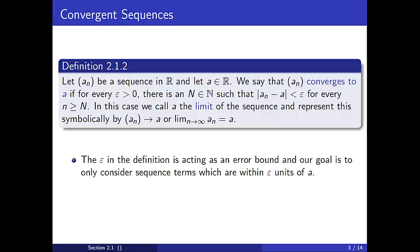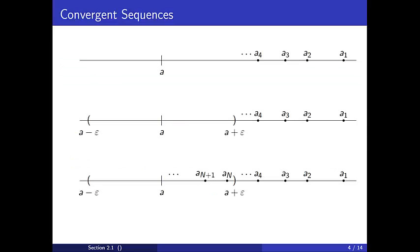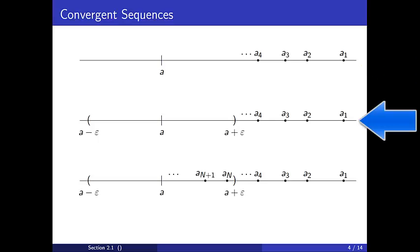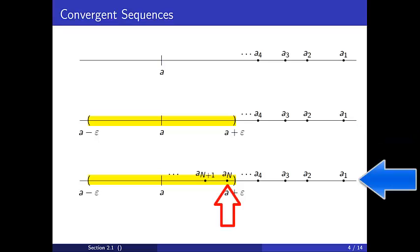Looking at the definition of a convergent sequence more closely, suppose we have a sequence a_n and a limit candidate a. The epsilon in the definition is acting as an error bound and our goal is to only consider sequence terms which are within epsilon units of a. Capital N represents a position in the sequence and we must choose this explicitly. Choosing an arbitrary positive epsilon creates a neighborhood around the limit candidate a, and we now need to find a position in the sequence N after which every term is within this neighborhood.